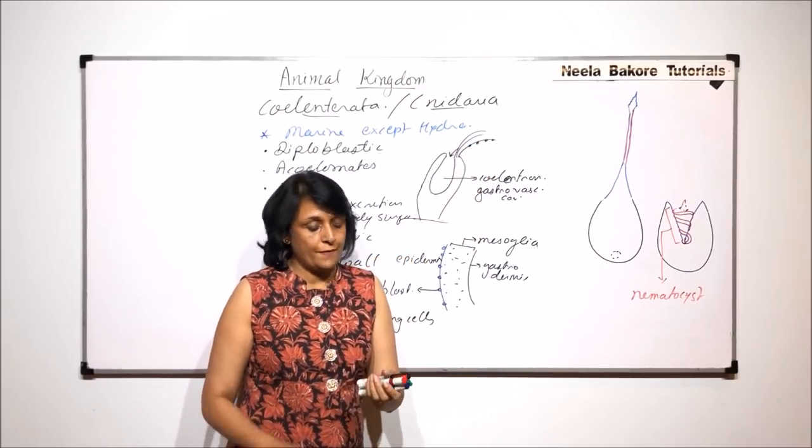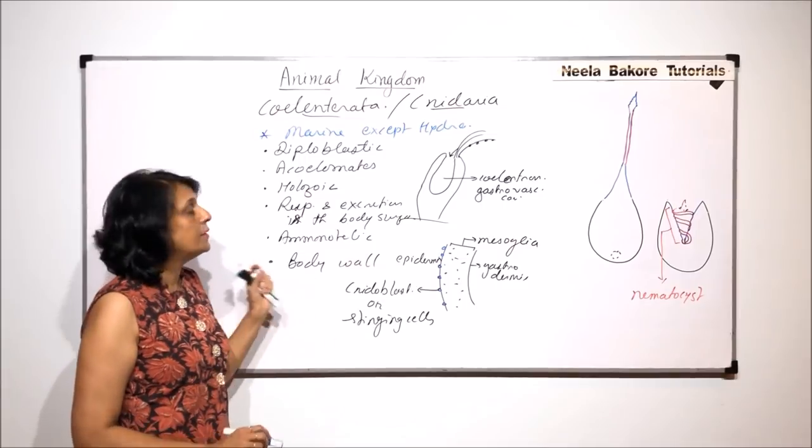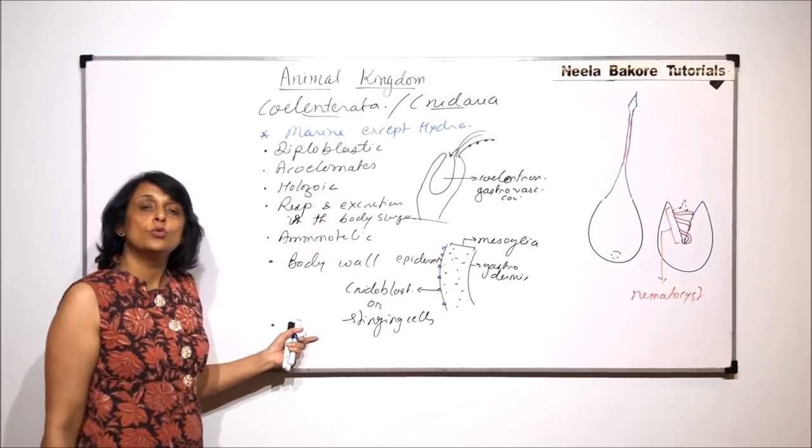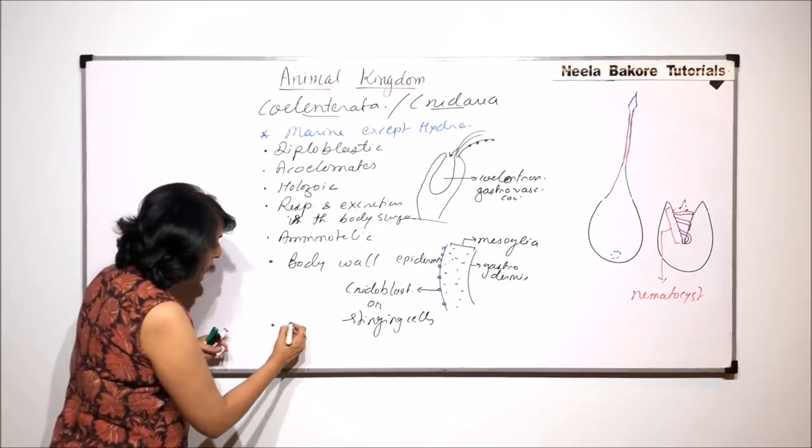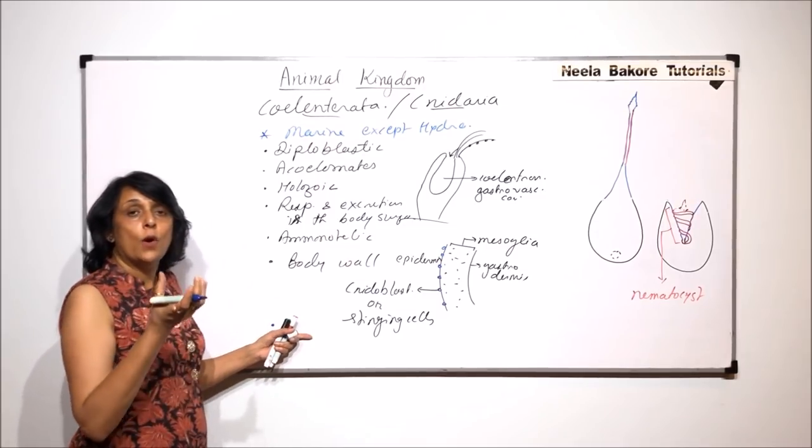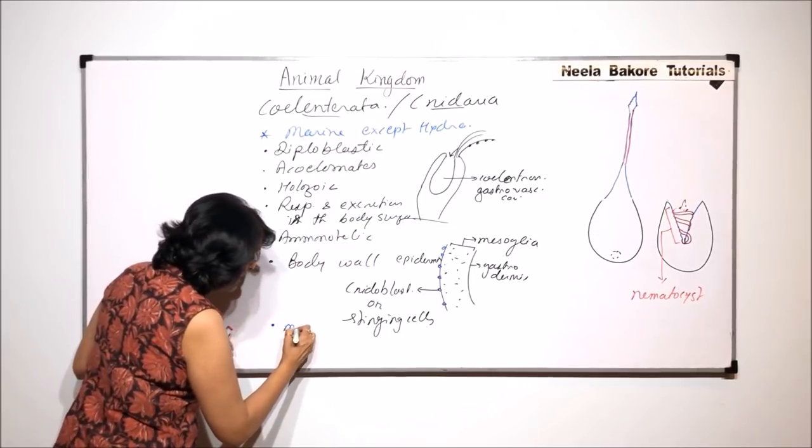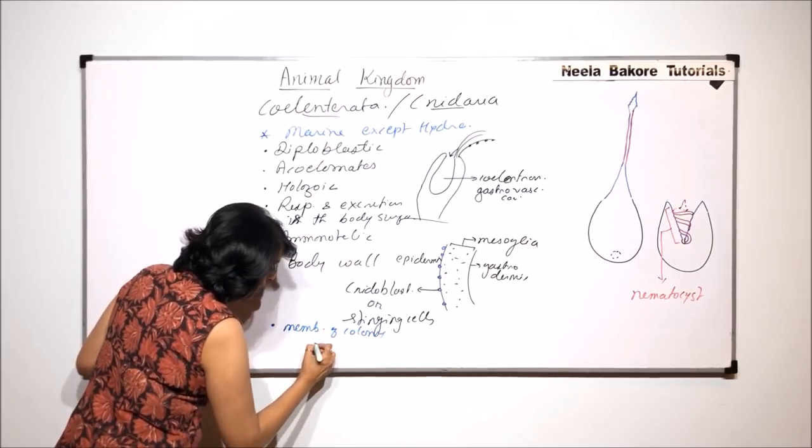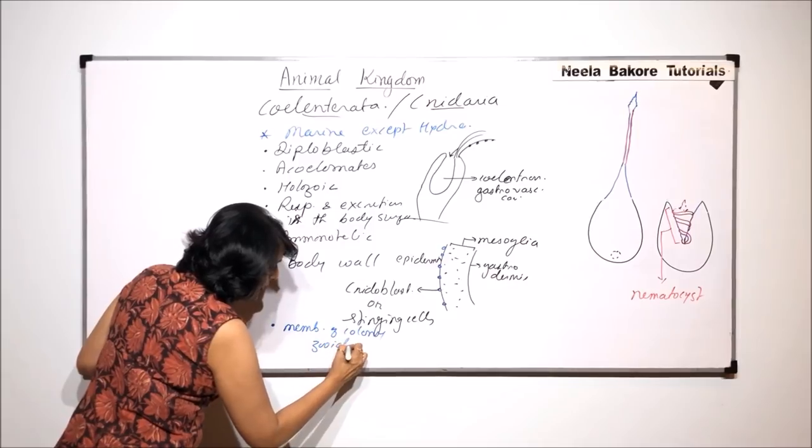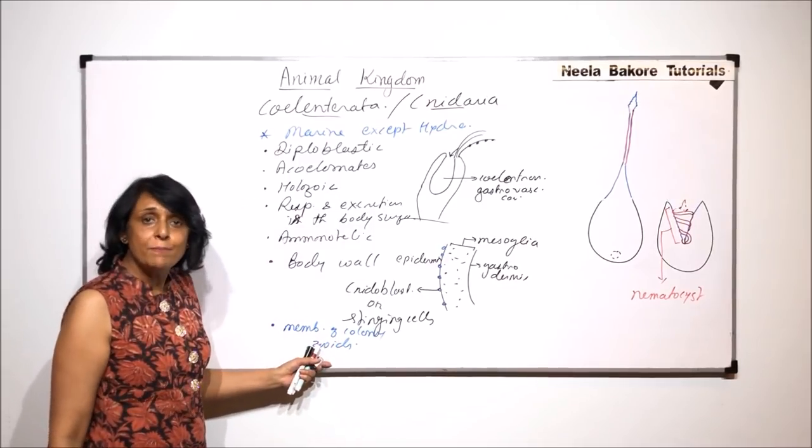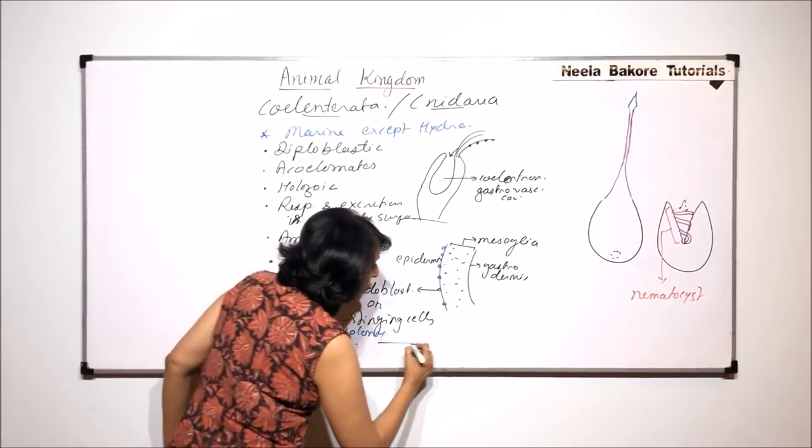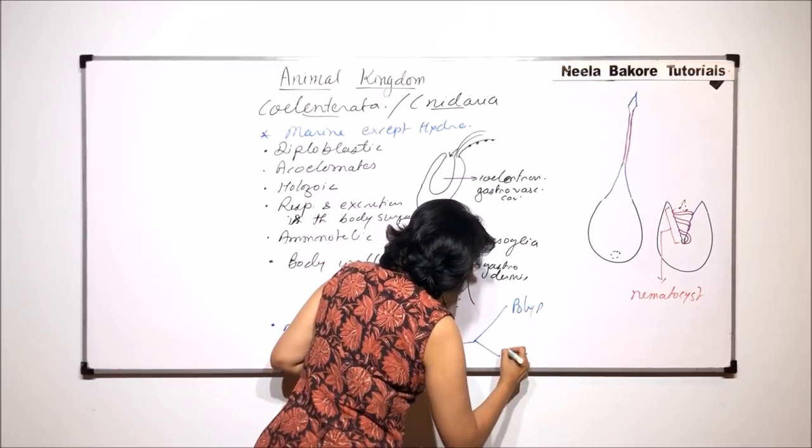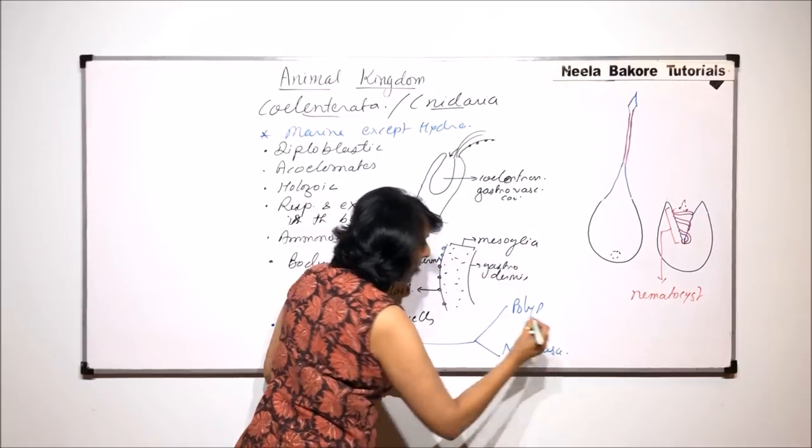These stinging cells are present on the outer layer as well as on the tentacles. They help in defense. One more important thing about coelenterates is that they show two types of forms. And if they are in the form of colony, the members of colony are known as zooids. And these members, they can be of two types. One can be a polyp or the other one can be medusa.